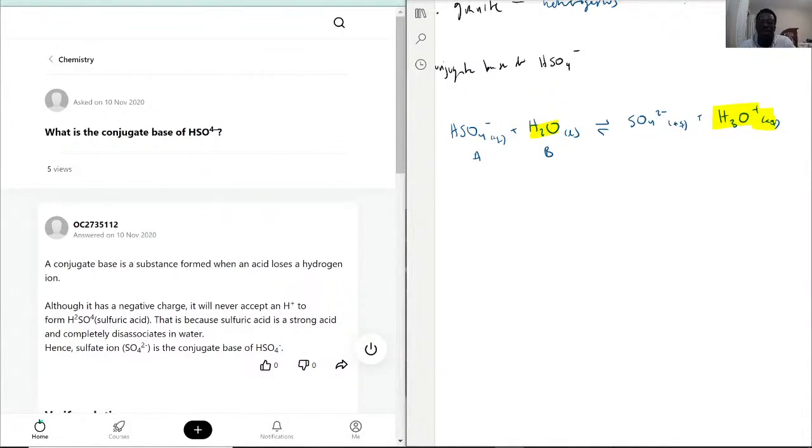So if we have acid and base here, this is going to be our conjugate base and conjugate acid, that's the result that I was supposed to produce from them. So now we can see that our conjugate base here is SO4 2 minus.